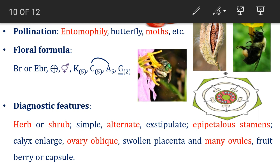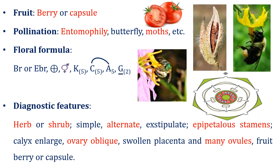Diagnostic features for the family: habit is shrub or herb; leaves are simple with alternate phyllotaxy and are exstipulate; stamens are epipetalous; calyx is enlarged; ovary is obliquely placed; placenta is swollen; many ovules are present; and the general fruit type is berry or capsule.